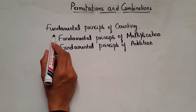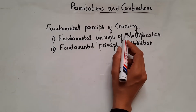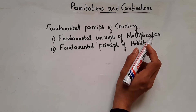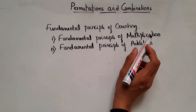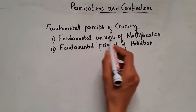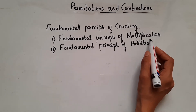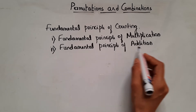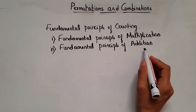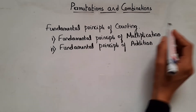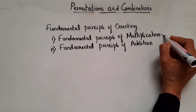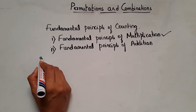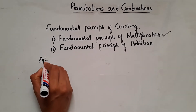So now let's see what is fundamental principle of counting. In fundamental principle of counting, we have two types: one is fundamental principle of multiplication, and one more is fundamental principle of addition. So first let's see what is fundamental principle of multiplication. Let me explain by taking an example.